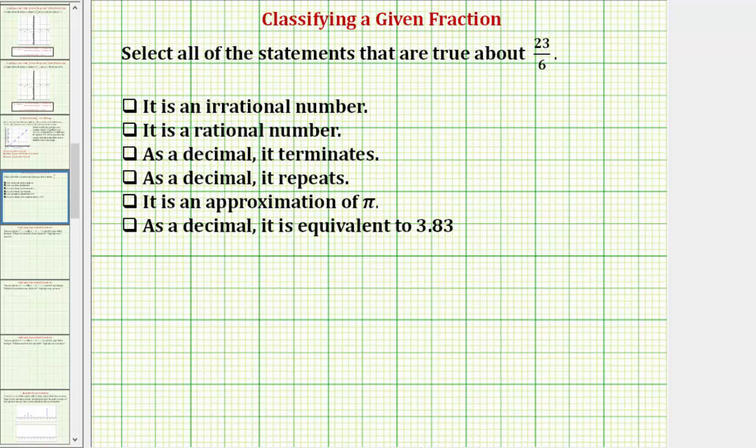For review, the definition of a rational number is any number that can be written in the form of a over b, where a and b are integers, and b is not zero. Because we're given the value as a fraction, we know that it is rational and is not irrational. So the second statement is true, the first statement is not true.